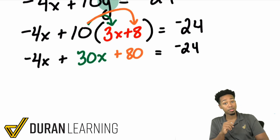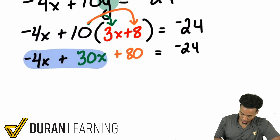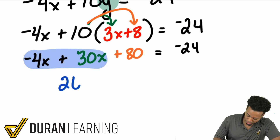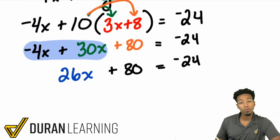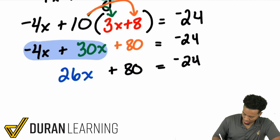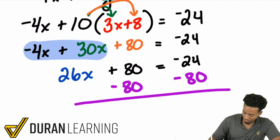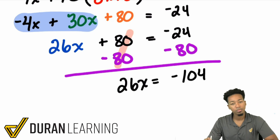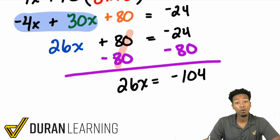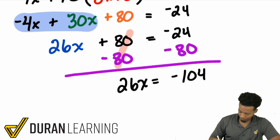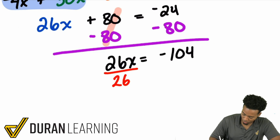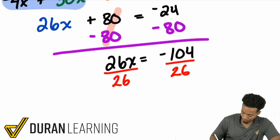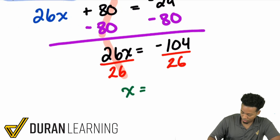Let's combine like terms. Negative 4X plus 30X is 26X, so we have 26X plus 80 equals negative 24. Subtract 80 from both sides, giving us 26X equals negative 104. Then divide both sides by 26, and that gives us X equals negative 4.